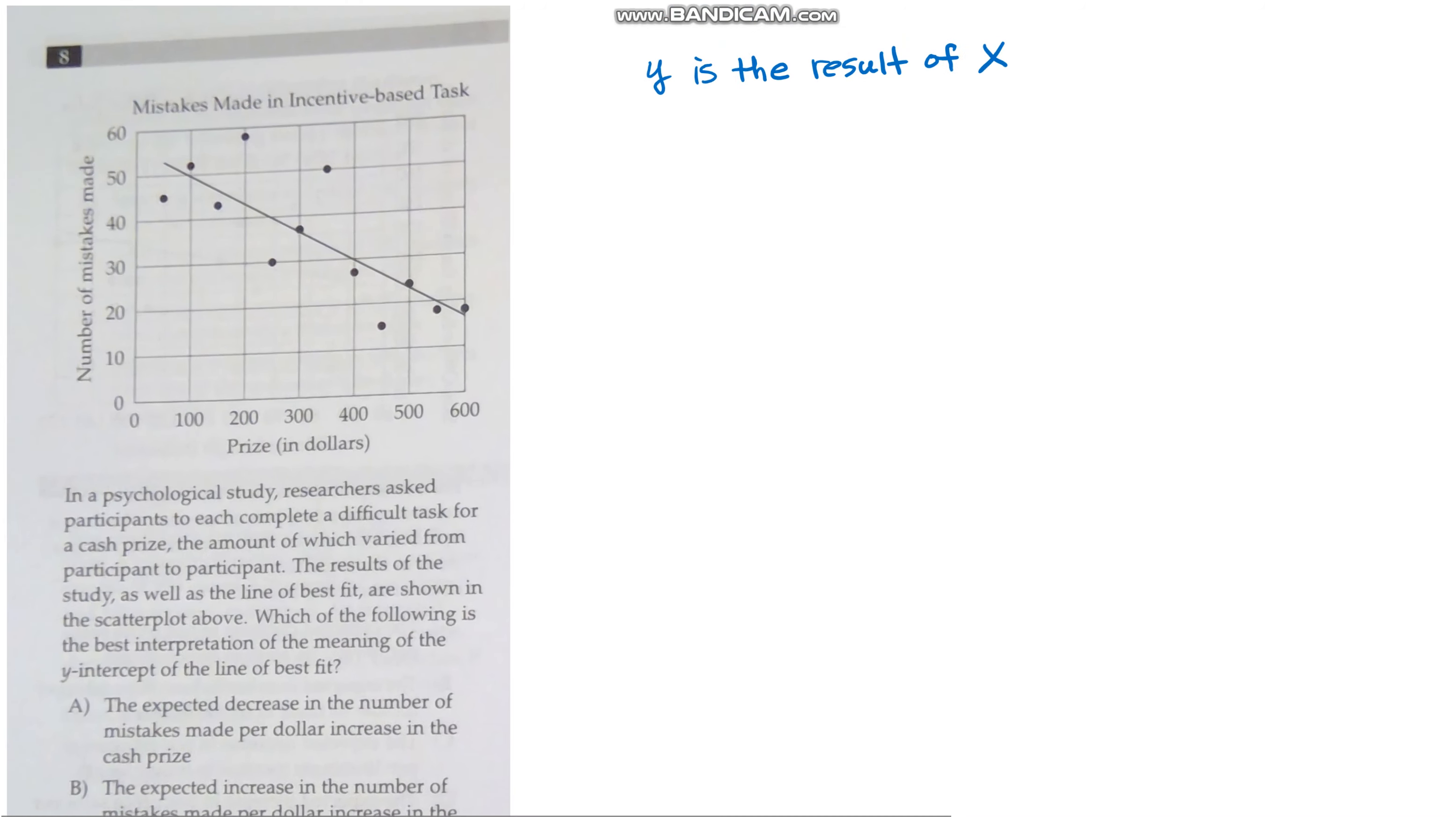And then I'll ask them which answer that is and it ends up being D: the expected number of mistakes a person would make when no cash prize is offered.